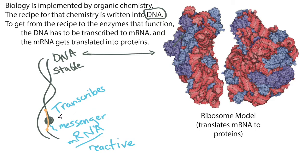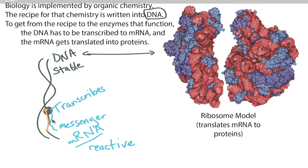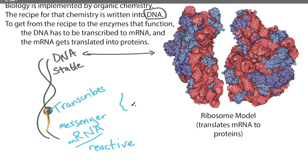Once the enzyme gets to the stop codon, the messenger RNA is created, and then that messenger RNA floats away from the site. Eventually that messenger RNA reaches the ribosome.